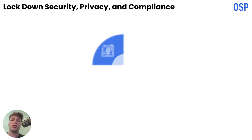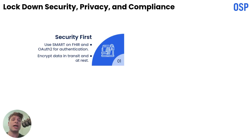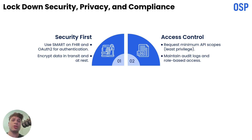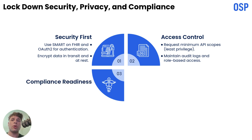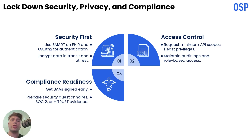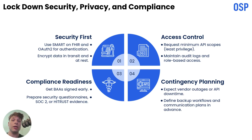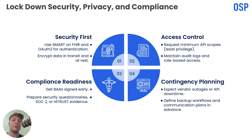Healthcare data is highly sensitive, so security is not optional — it's contract-level and business critical. Use SMART on FHIR and OAuth 2 for authentication. Request the minimum scopes you need. Encrypt everything in transit and at rest. Keep exhaustive audit logs and control access with role-based permissions. Also, get your BAA signed early. Many customers and vendors require security questionnaires or SOC 2 or HITRUST evidence. And don't forget contingency planning — vendor outages happen, so have alternate workflows and communication plans ready.